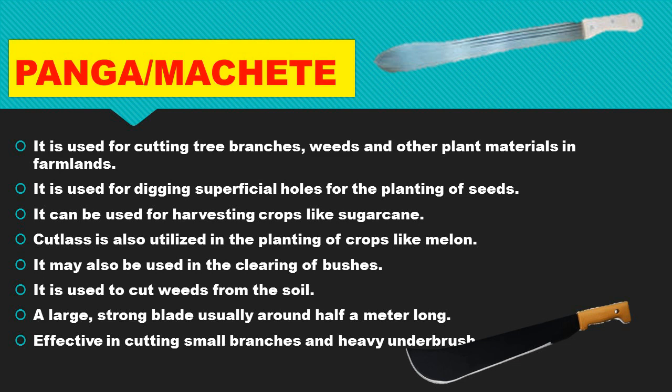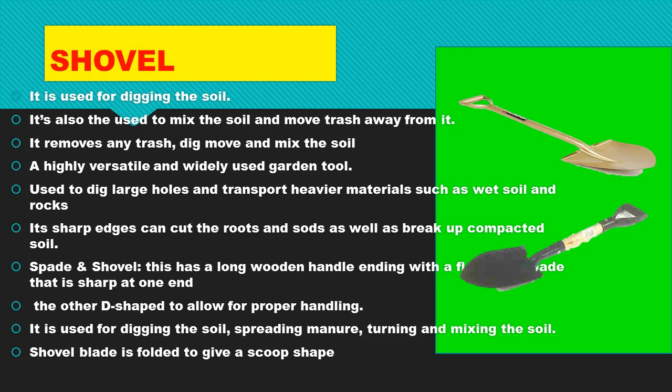The panga or machete is used for cutting tree branches and other plant material in farmlands. It is used for digging superficial holes for planting seeds, for harvesting crops like sugarcane, for clearing bushes, and for cutting weeds from the soil. It is a larger, strong, broad blade usually around half a meter long.